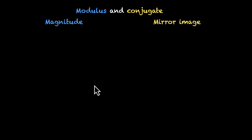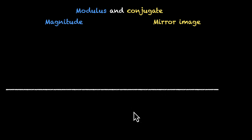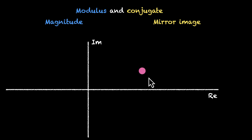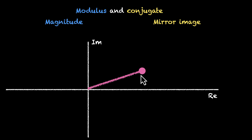Let's dive deeper. Let's draw the axes — we have the real axis, we have the imaginary axis, and this is our complex number; let's call this Z. The magnitude is this length from the origin to this point. This length is going to be the magnitude of the complex number.